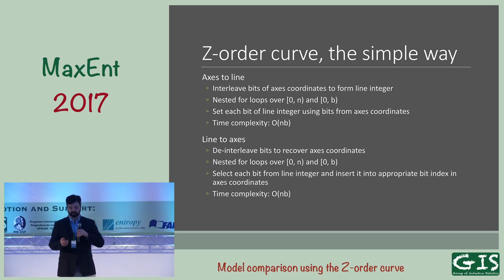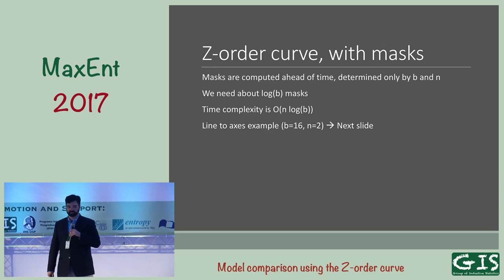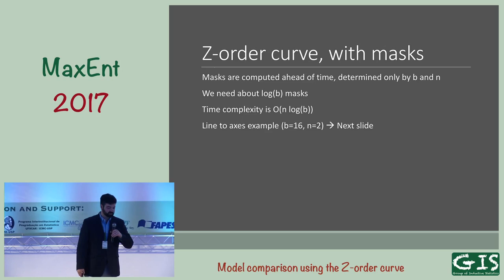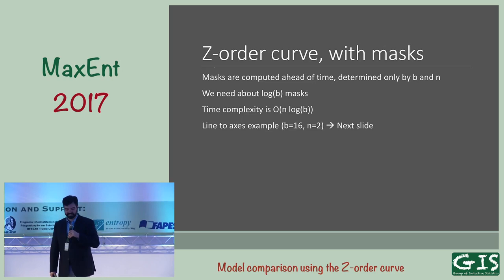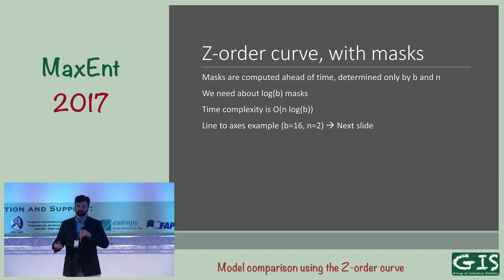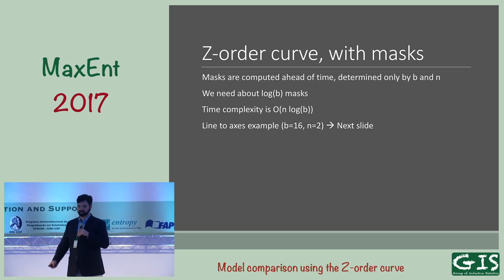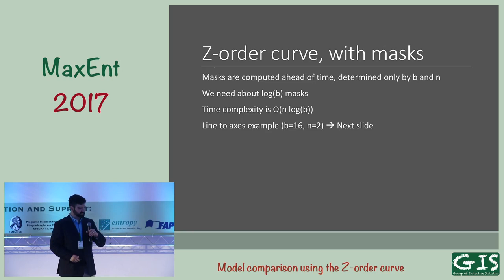The more interesting and faster approach uses bit shifts and bit masks. This was inspired by various posts online; one Stack Overflow user had a comprehensive approach with code for generating the bit masks needed for an arbitrary number of dimensions and bits per dimension. The vast majority of discussions about the Z order curve deal with two dimensions for image processing, but we need an arbitrary number of dimensions and bits. The masks are computed ahead of time, depending only on the number of bits per dimension and number of dimensions. You end up with on the order of log B masks, giving time complexity O(N × log B).